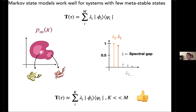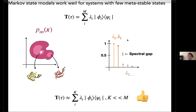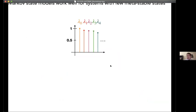Most degrees of freedom relax quickly in simulation, and only a few take a long time to sample — in those cases this approach works well. This boils down to the eigenvalue decomposition of the Markov model having relatively few eigenvectors with eigenvalues close to one. In highly frustrated systems with many eigenvalues close to one, this approach breaks down because we need to simulate for too long to do anything useful.